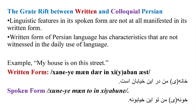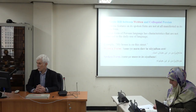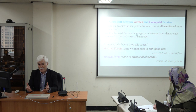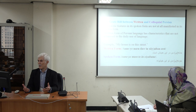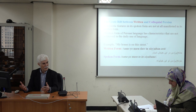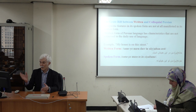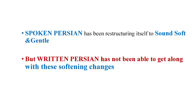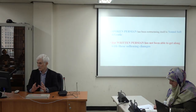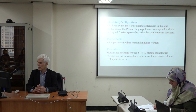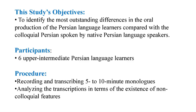The great rift between the two can be illustrated with an example. The written form is: 'khaneh-ye man dar in khiaban ast.' But we never hear this in colloquial form; we simply say 'khunem tu-ye in khiabune.' Compare these two — the written form sounds as if a book is talking. A spoken Persian has been restructuring itself to sound soft and gentle, but written Persian has not been able to keep pace with this change. This study's objective is to identify the most outstanding differences between oral and written Persian within the language that non-native speakers are practicing.